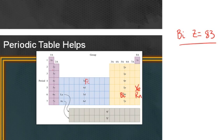Let's predict the ground state electron configuration for bismuth. Bismuth has atomic number 83, so that means it has 83 electrons.